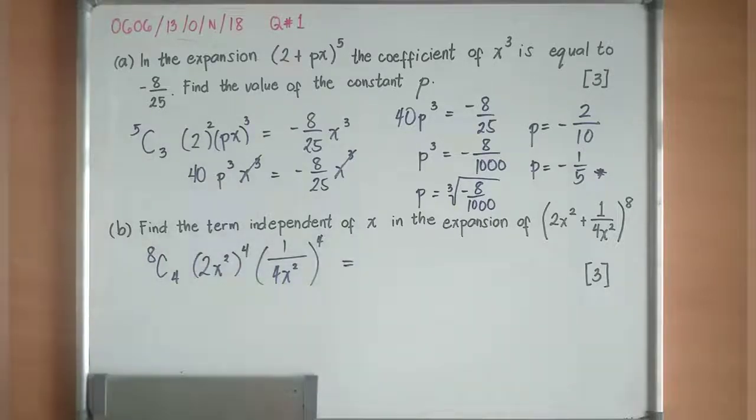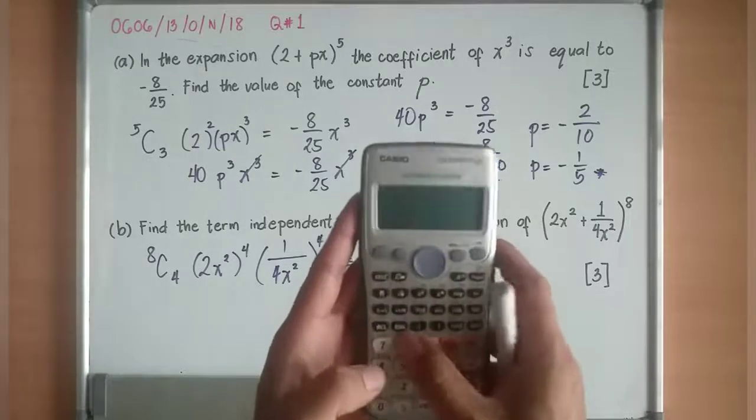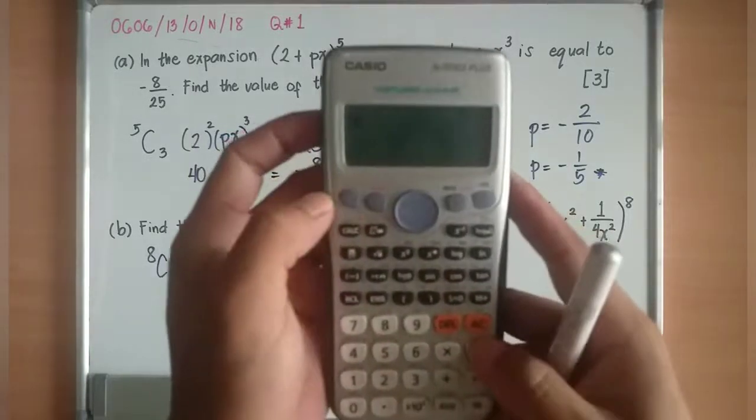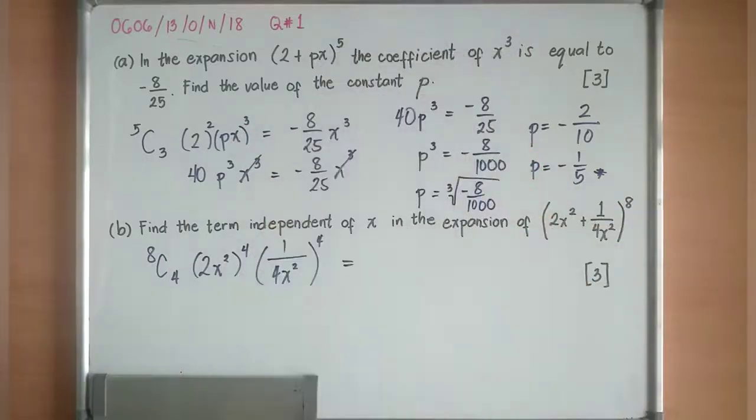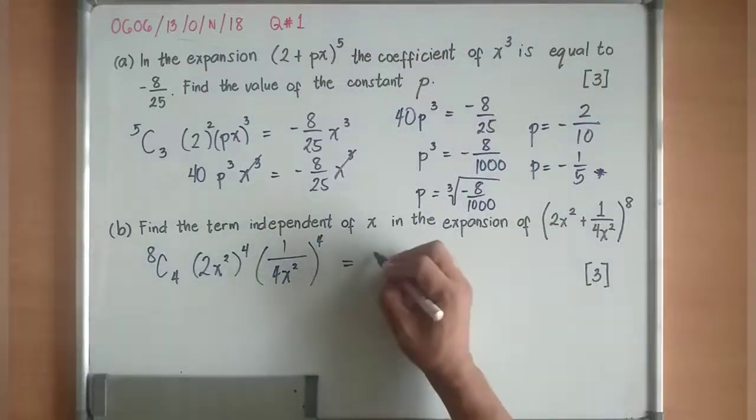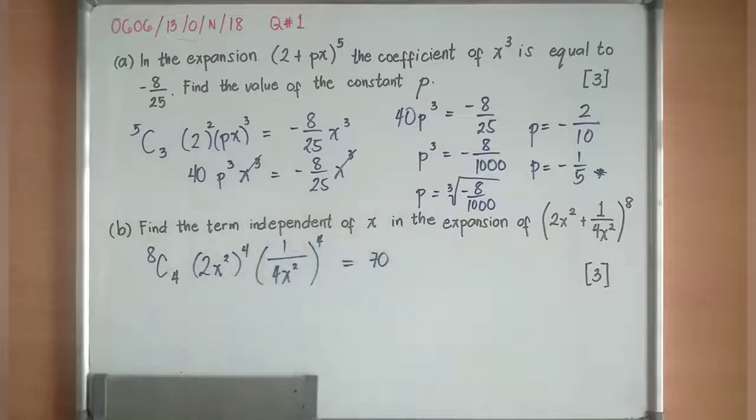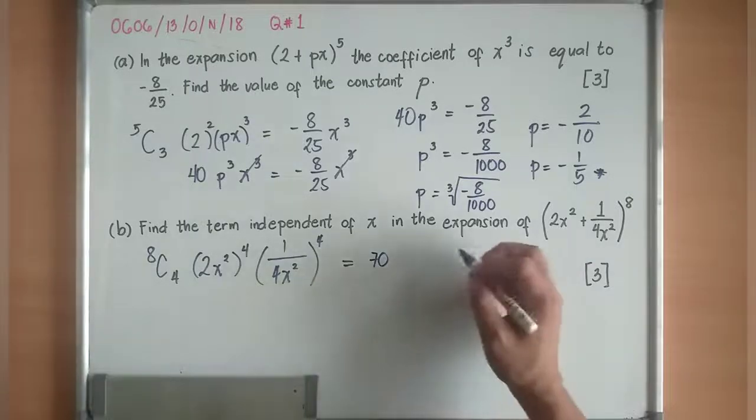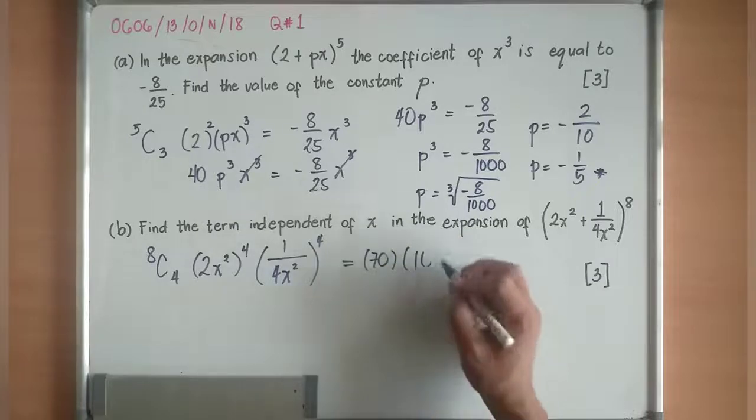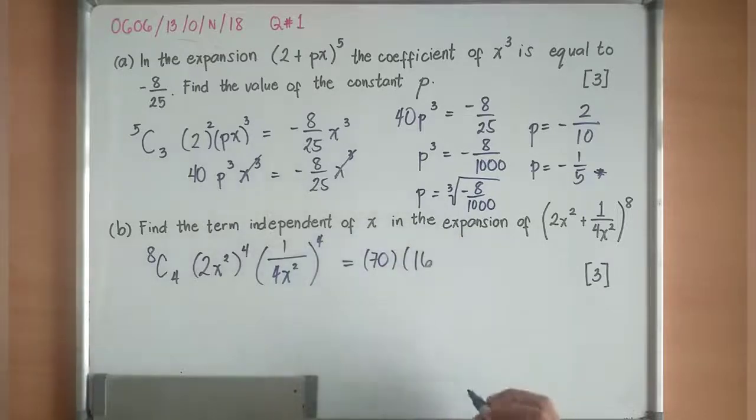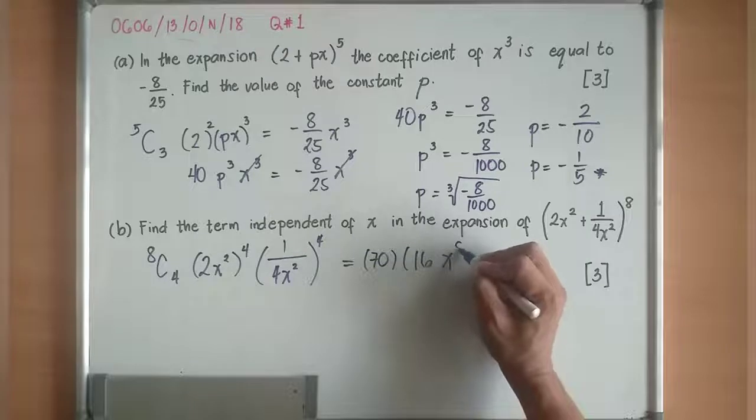Let's try to solve. So I have now 8, then shift, C4. I'll have 70. This is 70. 2 to the power of 4, 2 to the power of 4 is 16. Times 16. Then x to the power of 8.